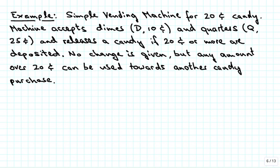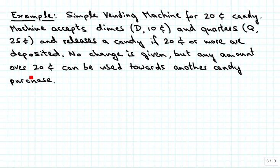The simple vending machine we consider here accepts dimes, meaning 10 cents, and quarters, each quarter 25 cents, and it releases a candy if 20 cents or more have been deposited. The machine doesn't give any change, but any amount over 20 cents can be used towards another candy purchase, so you get credit for the next purchase.